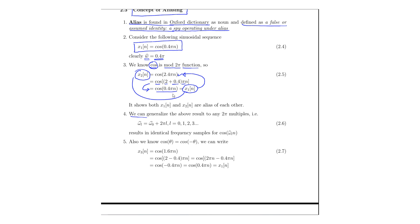We can generalize the above result to any 2π multiples. The discrete frequency ω̂_l is equal to ω̂_0 + 2πl, where l runs from 0, 1, 2, 3 and up to any integer n. All cosine frequencies having ω̂_l as their discrete frequencies are identical to ω̂_0.